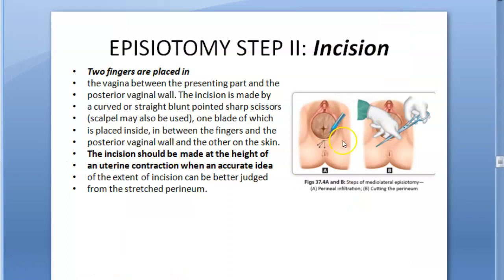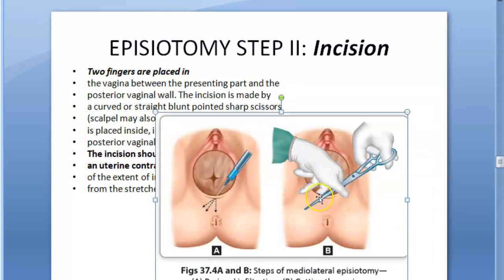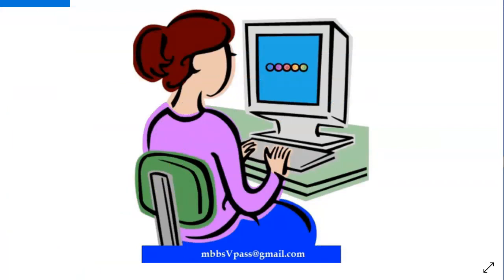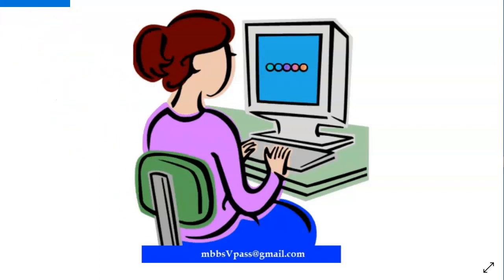You will make the incision at the height of the uterine contraction — do not forget this. Just saying 'second stage of labor before crowning' is not enough; you must add 'at the height of the contraction.' Whenever the contraction is strongest, the perineum will be very thin, and that is when you cut. You will start the cut at the center of the fourchette — F-O-U-R-C-H-E-T-T-E — and extend it either to the right or the left.